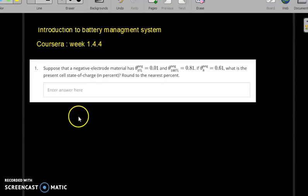In this question, it reads: suppose a negative electrode material has theta equal to 0.01 and theta 100% is 0.81. Theta indicates a concentration ratio - the concentration of solid lithium ions at an average value divided by the maximum value a battery can hold.